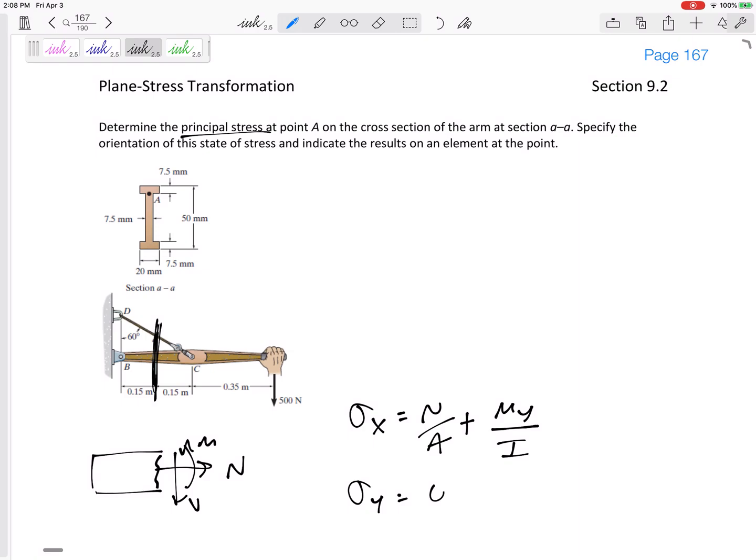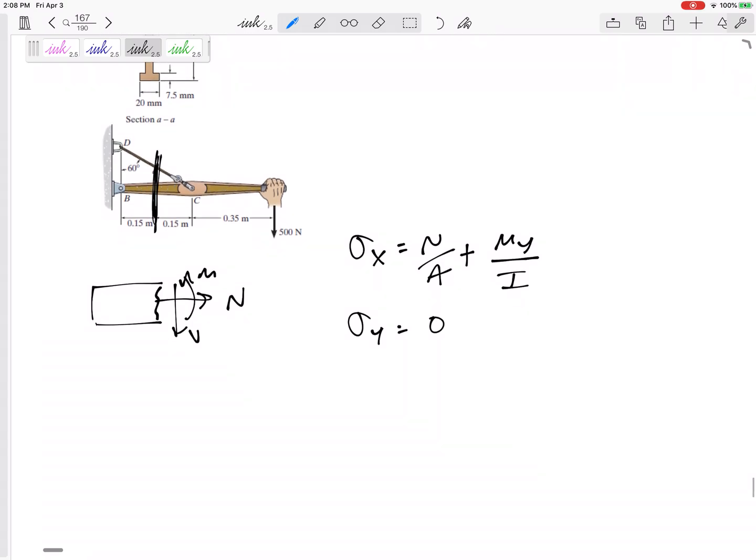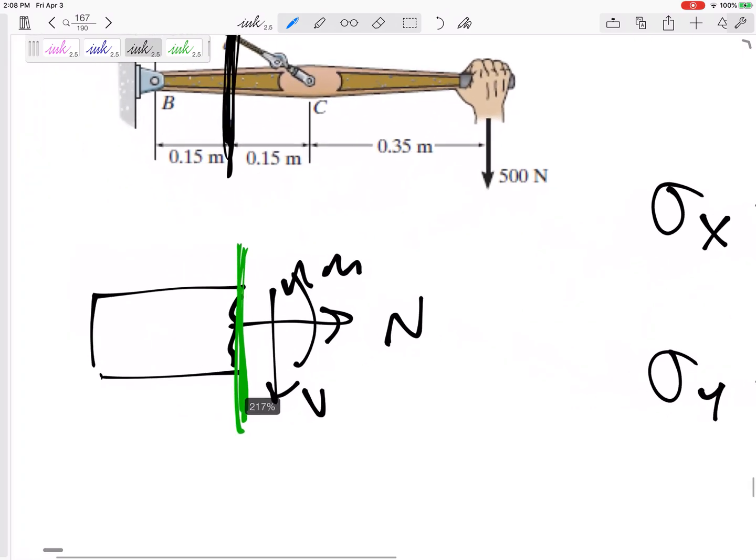My Sigma Y is going to be zero for these two-dimensional problems. If we cut it right here, there's no Sigma Y because there can be no compressive force down there on this cut that is vertical.